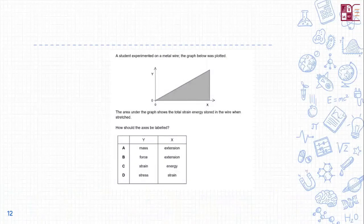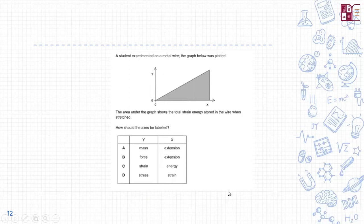Question 1: A student experimented on a metal wire and plotted a graph. The area under the graph shows the total strain energy stored in the wire when stretched. How should the axes be labeled? The y-axis should be labeled force and the x-axis should be labeled extension.